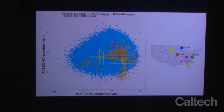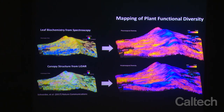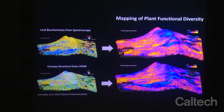We can also integrate a lot of different data from LiDAR and imaging spectroscopy to really start to understand the drivers of what these patterns look like. This is from Fabian Schneider's dissertation research in Switzerland — integrating these multiple data types to get a really comprehensive picture of ecosystem structure and function.